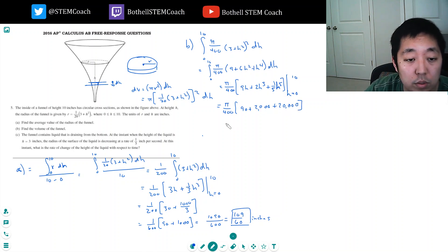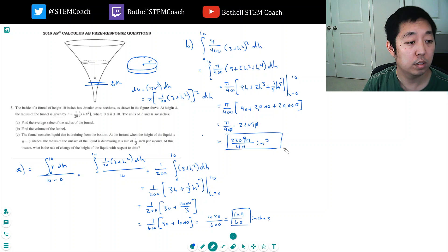So I get pi over 400 times 22,090. I can cancel out a 10. And so I'll write it as 2209 pi over 40. Inches cubed. Because it's volume. Okay.